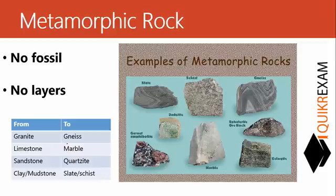Metamorphic rock forms due to high pressure and temperature conditions. It does not contain any fossils or layers. The name itself suggests it is converted from some original rock under certain conditions. Examples of conversion include: granite converts to gneiss, limestone converts to marble, sandstone converts to quartzite, and clay or mudstone converts to slate.